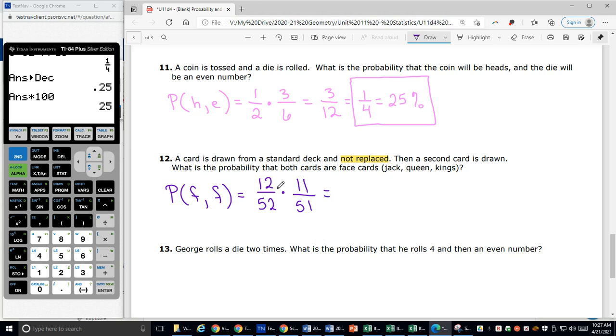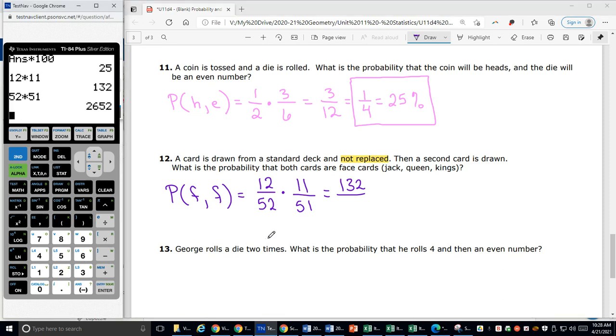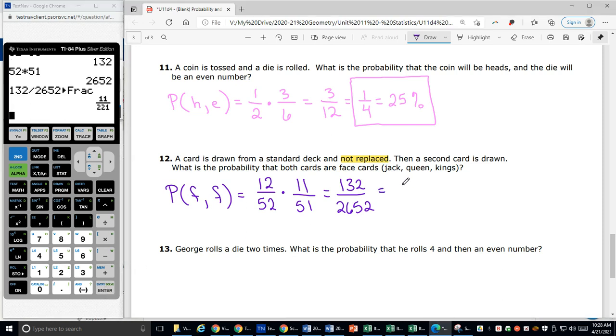So my total probability then is 12 times 11, 132, over 52 times 51, 2652. Let's see if we can get a nicer fraction. 132 divided by 2652, I should be able to because they're both even, so they at least divide in half. I get 11 over 221. Let's see what that is as a percentage. So 11 times out of 221 times, I should get two face cards.